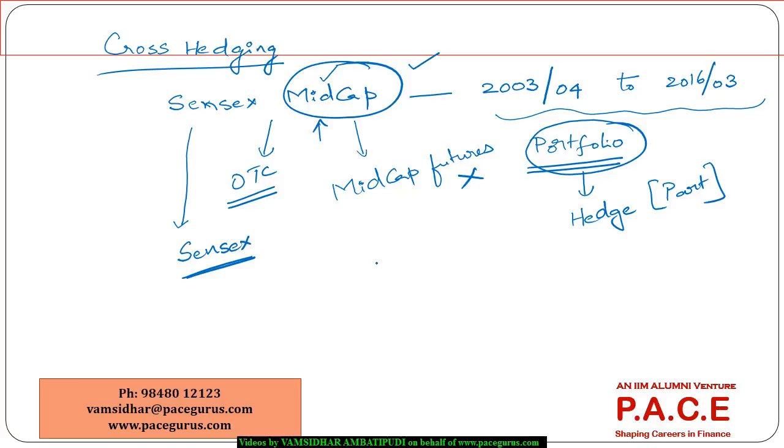Mid-cap exposure, I wanted to hedge through the Sensex. I really want to find out what is the optimal hedge ratio, which means how many units of Sensex do I really need to go short on or long on, if at all I want to hedge one single unit of the mid-cap futures. This is what I am calling as the optimal hedge ratio.